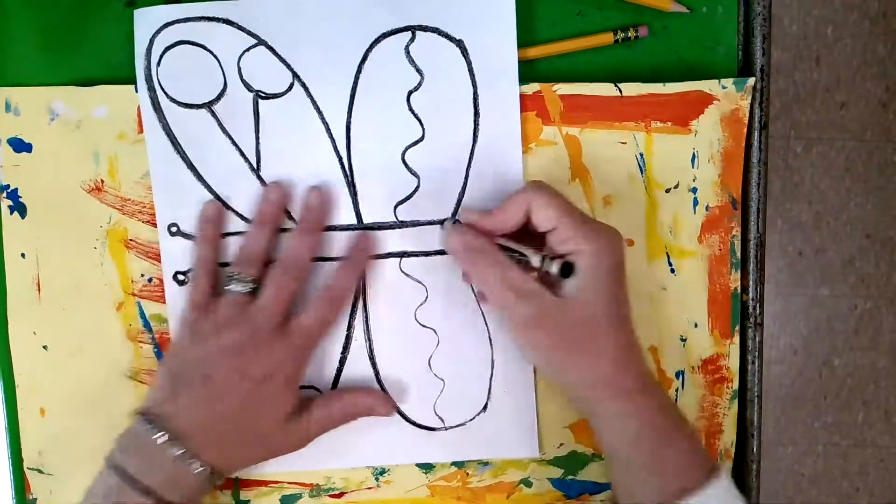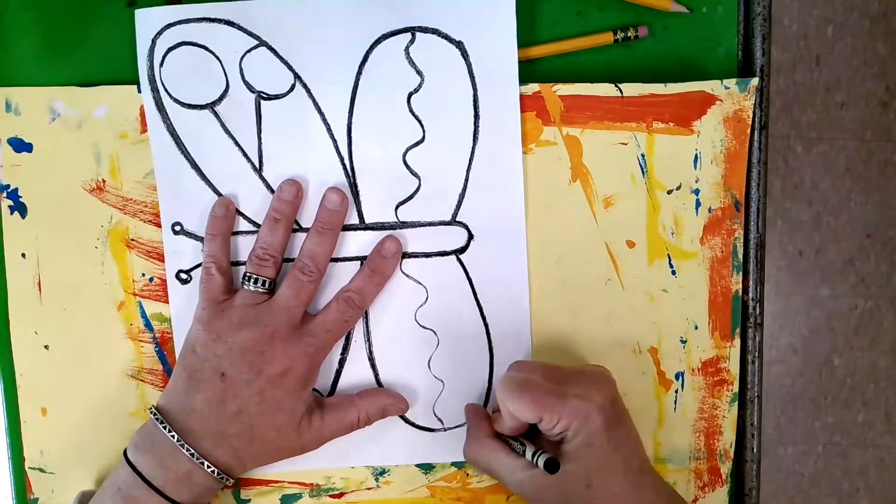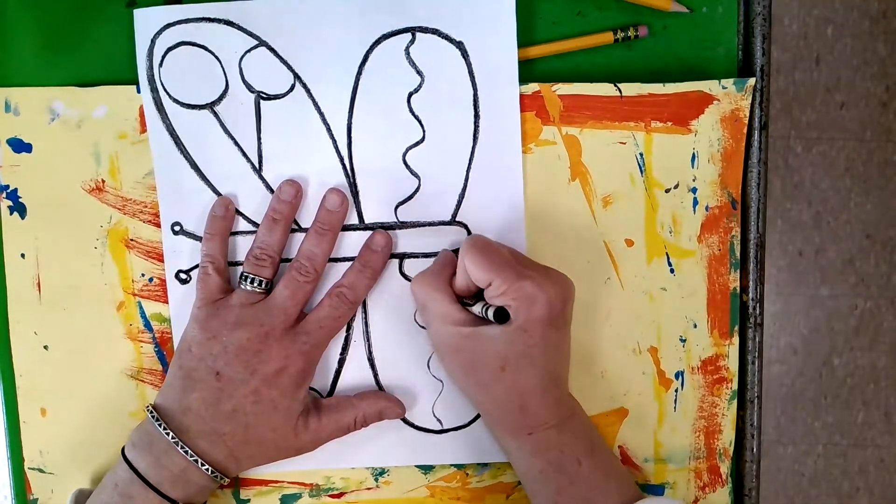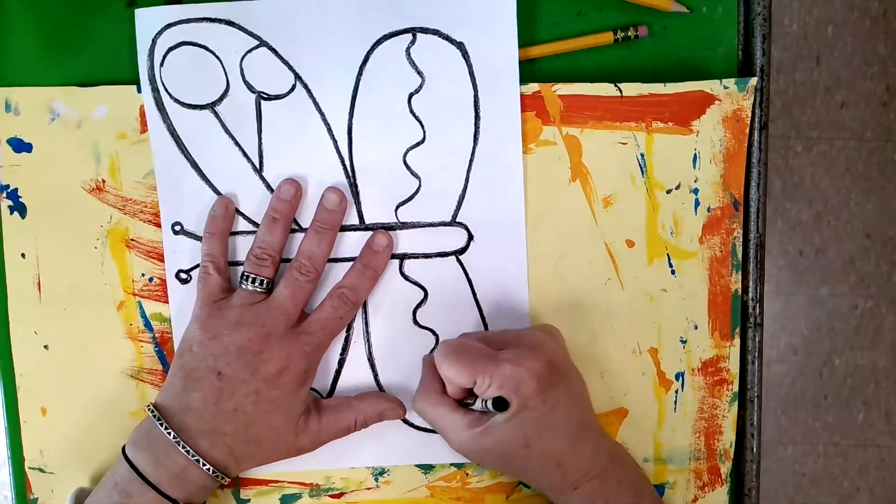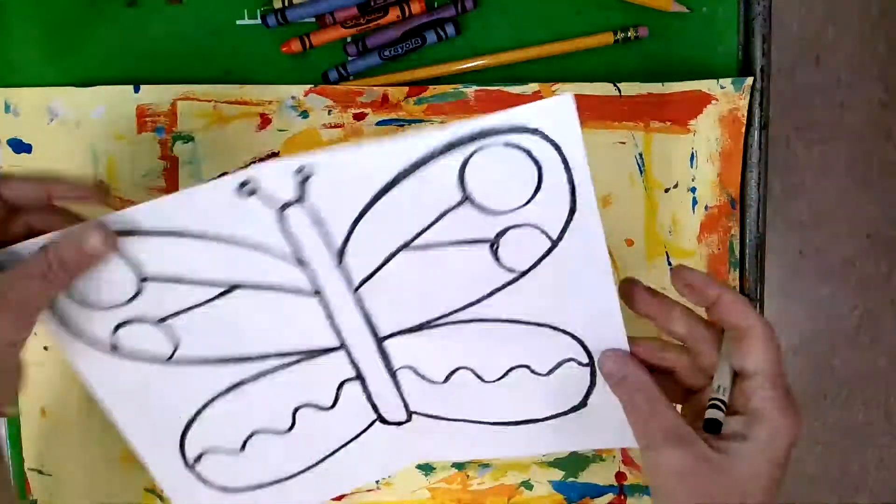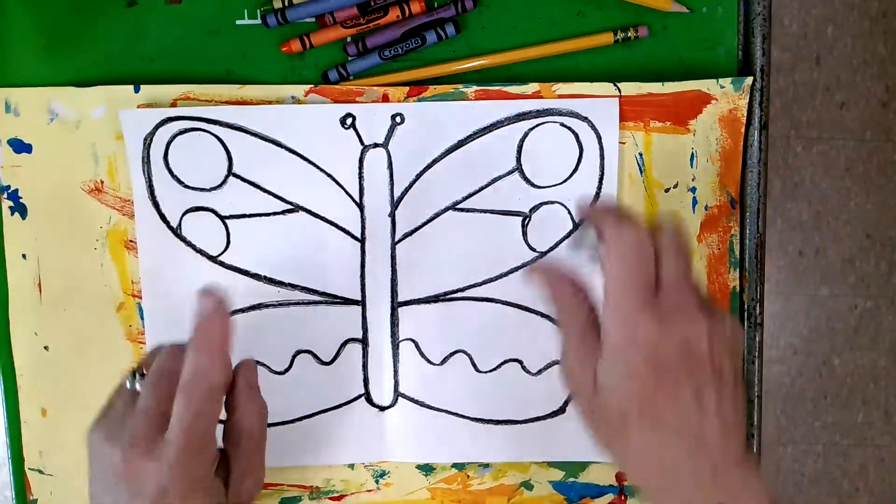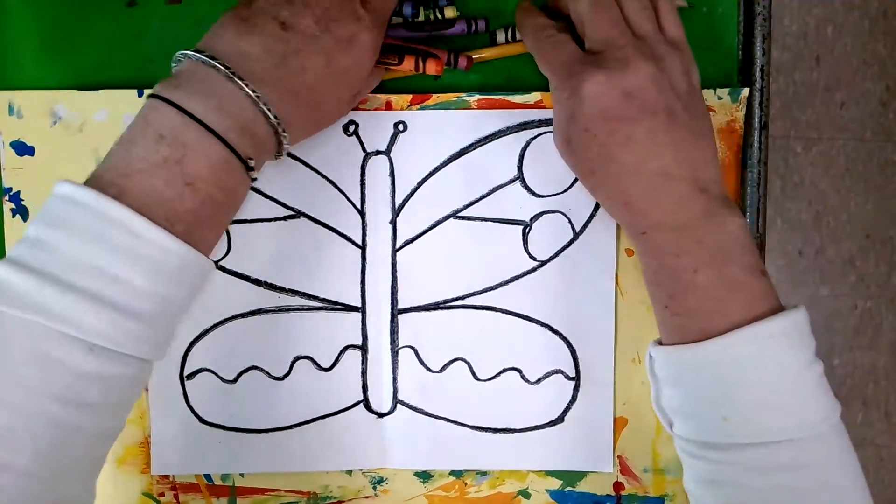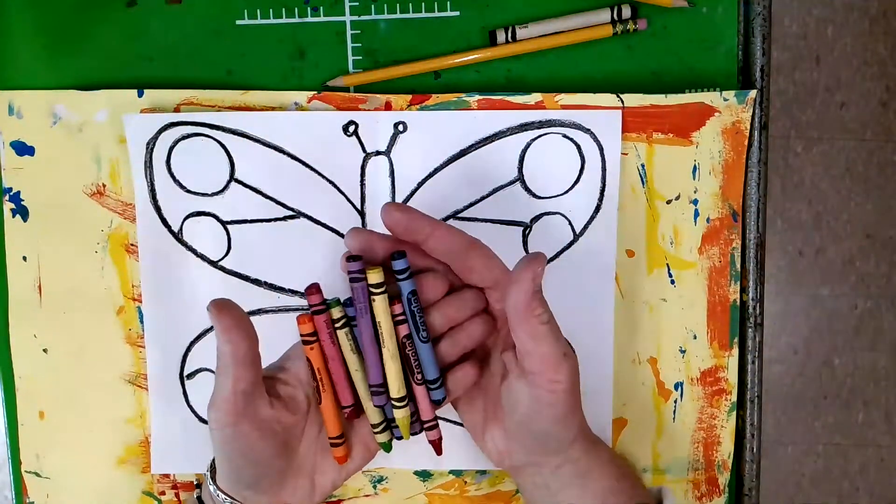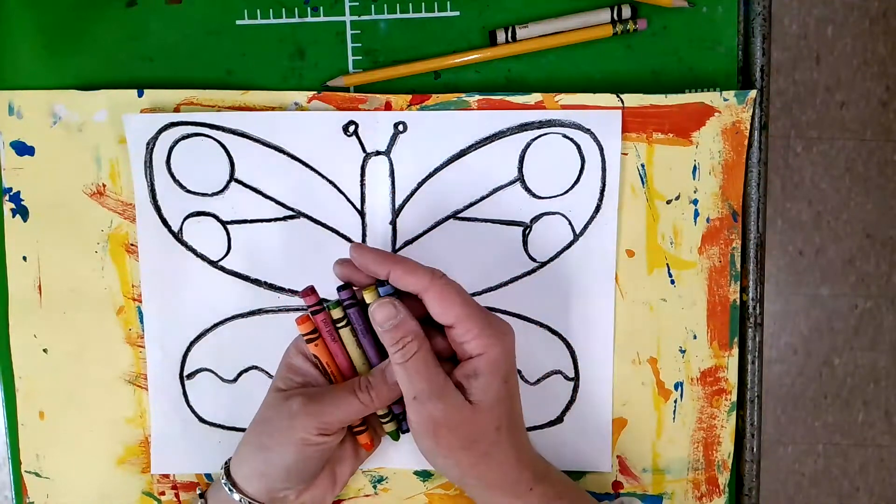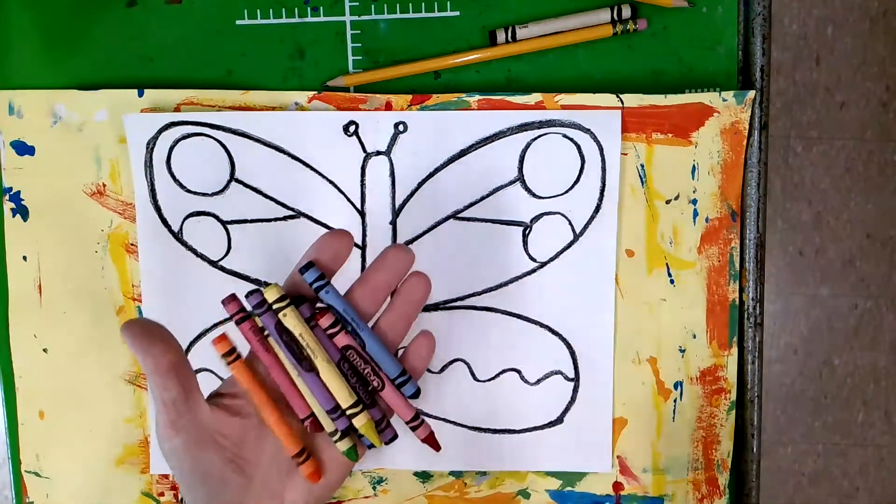So I'm just going to take my crayon, go all the way around, finish filling this in. Now I've got a perfectly symmetrical butterfly. Your job now is to take these crayons and color in your butterfly. I'm going to color in my butterfly right now.